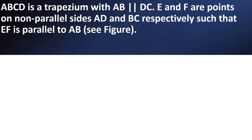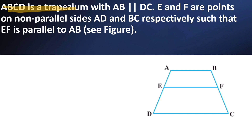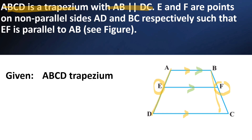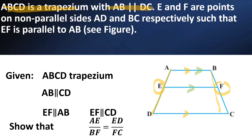Here we have been given ABCD is a trapezium with AB parallel to CD. E and F are points on non-parallel sides AD and BC respectively, such that EF is parallel to AB. So EF is also parallel to CD. We have to show that AE/BF is equal to ED/FC.